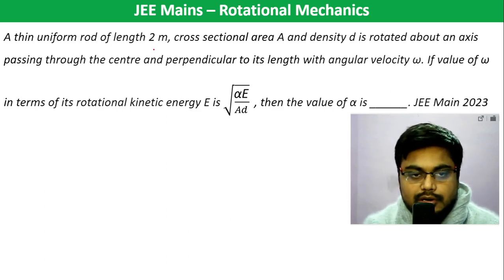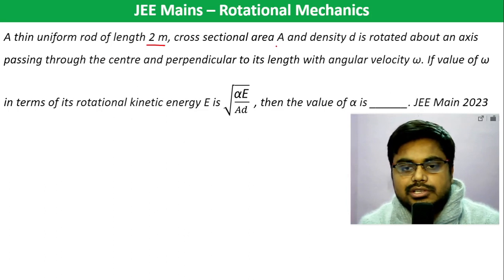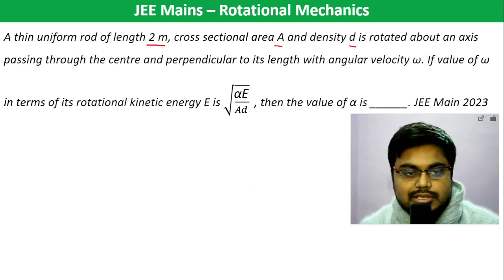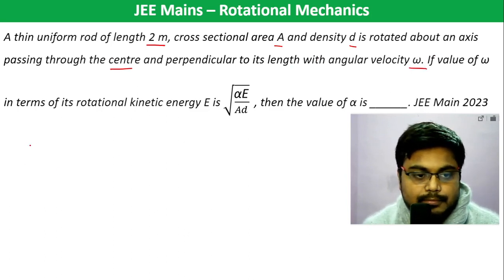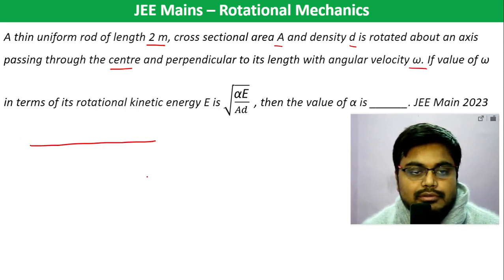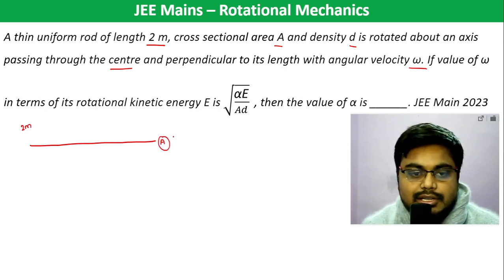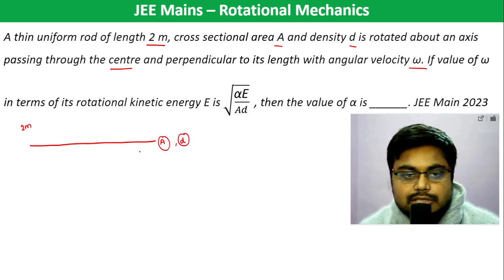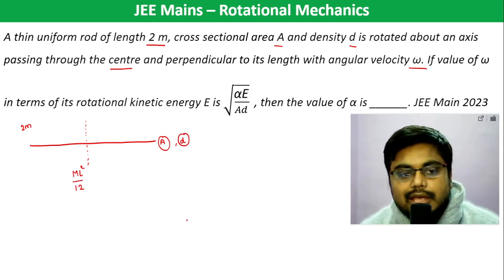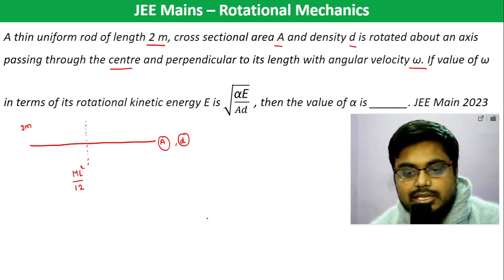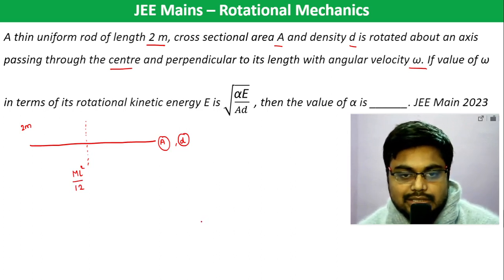A thin uniform rod of length 2 meter, cross-sectional area A, and density D is rotated about an axis passing through the center and perpendicular to its length with angular velocity omega. Given omega in terms of rotational kinetic energy E is sqrt(alpha * E / AD), find the value of alpha.